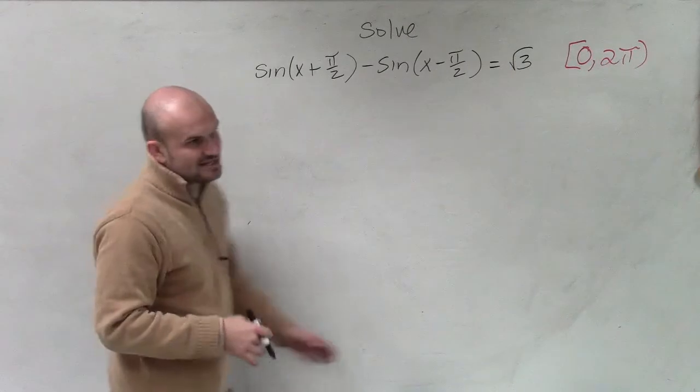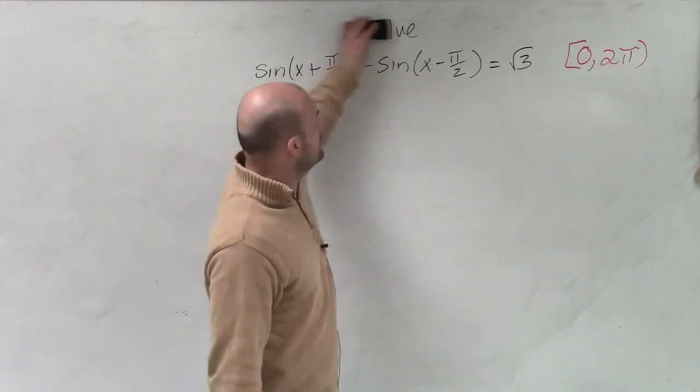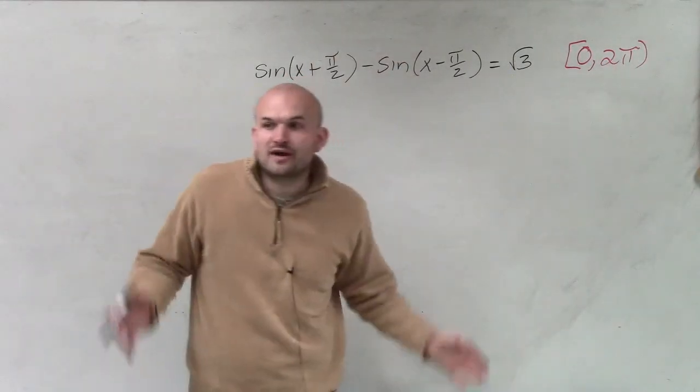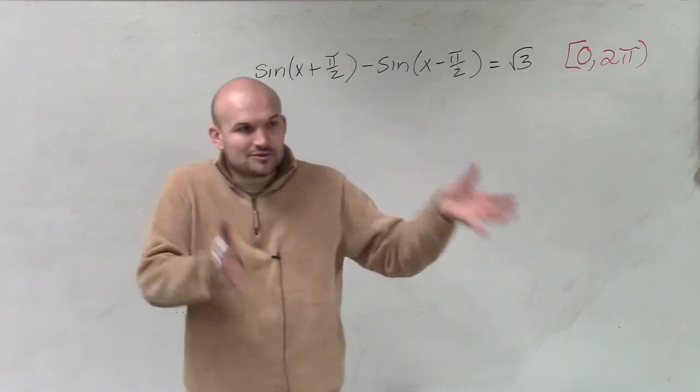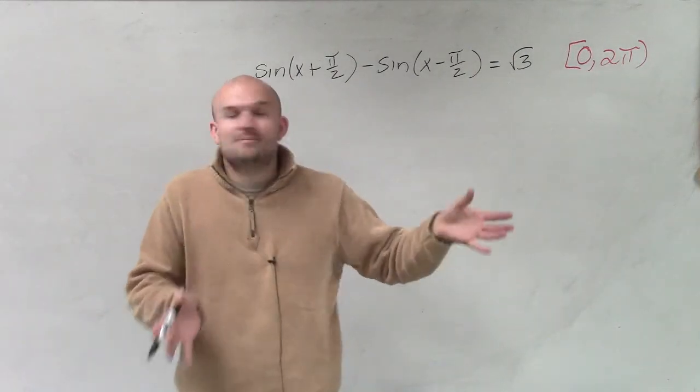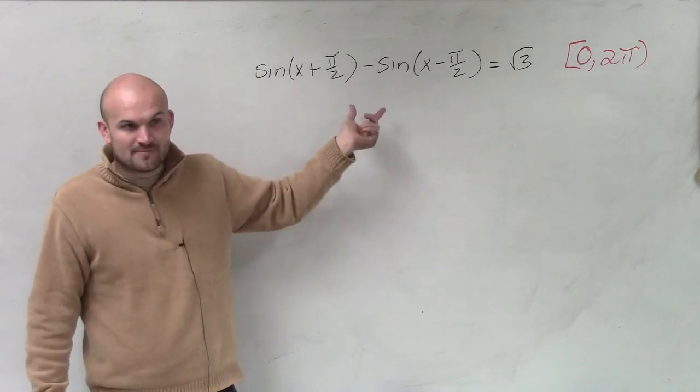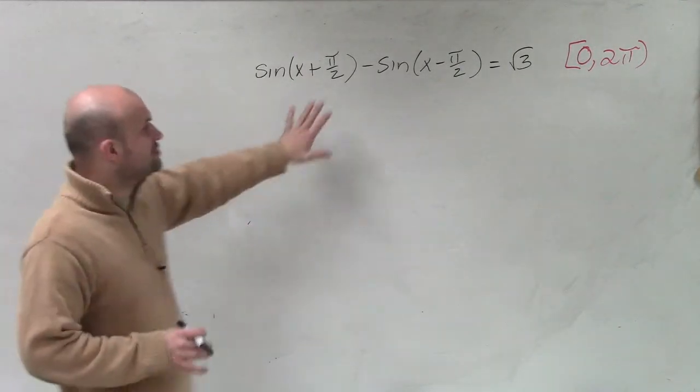The first thing, guys, they're asking us to solve between 0 and 2π. Solving means that I'm going to have a variable set equal to some value, right? So that means I need to isolate these variables here. Now, the next thing I see, Miranda, is that I have two.